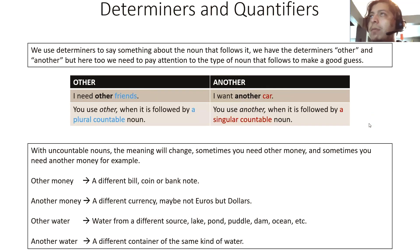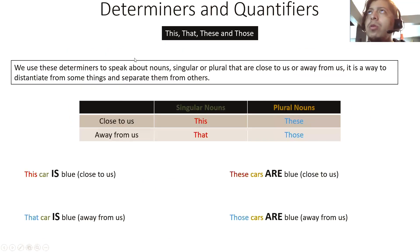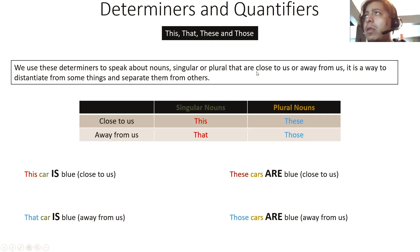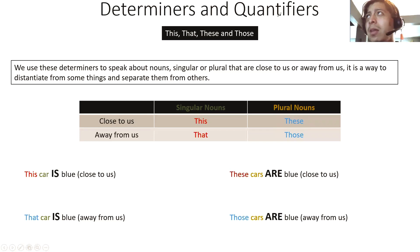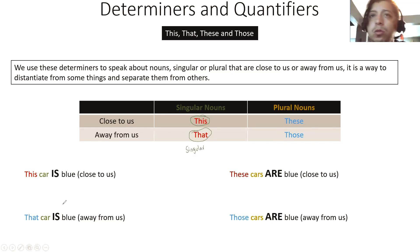Now, how to use other determiners: 'this,' 'that,' 'these,' and 'those.' We use these determiners to speak about nouns — singular or plural — that are close to us or far away from us. It is a way to distance from some things and separate them from others. We have 'this' and 'that' — these are for singular nouns. 'This car is blue' — singular. 'That car is blue' — singular again.